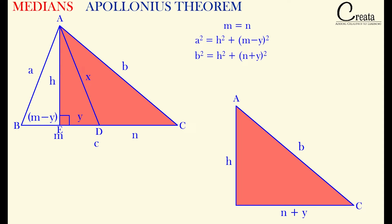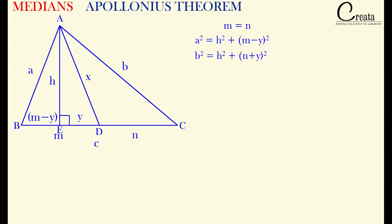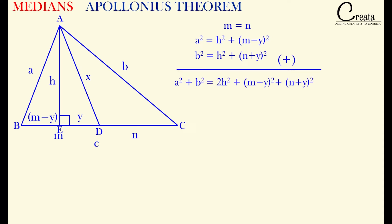We have got two equations — let's add both. We get: a² + b² = 2h² + (m − y)² + (m + y)². Since BD = DC, d is the midpoint, meaning m = n, so we can replace n with m. So we get: a² + b² = 2h² + (m − y)² + (m + y)².